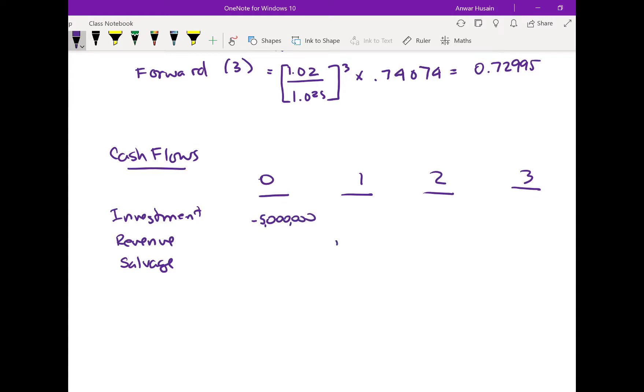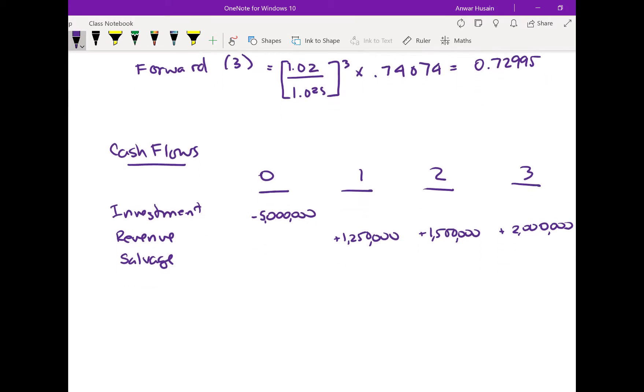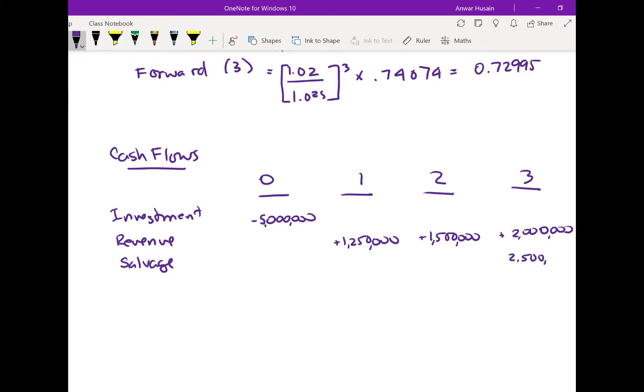The revenue was given, and that's going to be a negative. So the revenue was given as 1,250 in year one. In year two, it was 1,500. And in year three, it was 2 million. And then the resale was in year three. At the end of the life of the machine, you could sell it for 2,500.